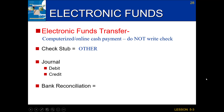We need to journalize an electronic funds transfer. If we're paying for something with an electronic funds transfer, it's the same as if we paid in cash or via check, which means our cash is decreasing — that's our credit in our journal. Then what we debit is accounts payable to whoever it is that we're paying or we owe.